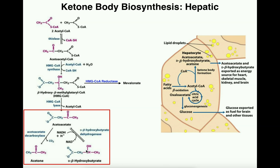Acetoacetate is a true ketone body. Actually, out of the three ketone bodies, really only two of them are ketones: acetoacetate and acetone. Beta-hydroxybutyrate does not actually have a ketone functional group, so it's kind of a misnomer, but it's still considered one of the three. Acetoacetate can be dumped into the blood and travel to peripheral tissues for energy. It can also be converted to the other two ketone bodies. The first is via beta-hydroxybutyrate dehydrogenase, which consumes NADH and reduces the ketone into a secondary alcohol — giving us beta-hydroxybutyrate, which can also be used for energy in peripheral tissues.